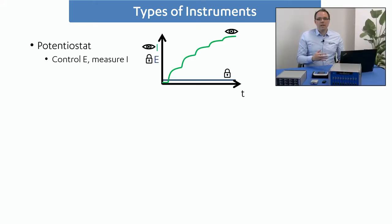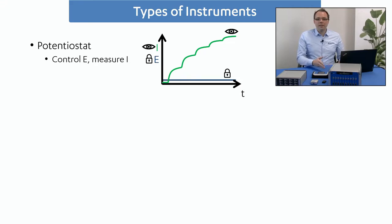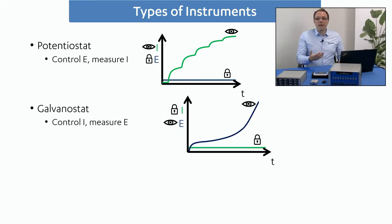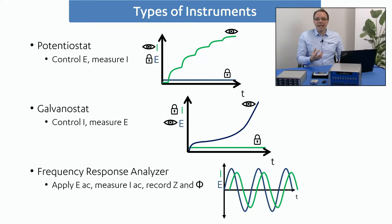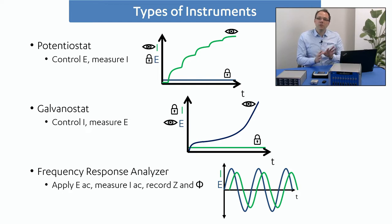The first one is, of course, the potentiostat, and that's what we're going to focus on today. The potentiostat lets you control the potential of your reaction and measure the current that is resulting from that. Another device like this is the galvanostat, and it kind of does the opposite — it controls the current and it measures the potential. While the frequency response analyzer does something very different: it applies a sine wave-shaped potential and measures the sine wave-shaped current reply back, then records the impedance and phase shift.